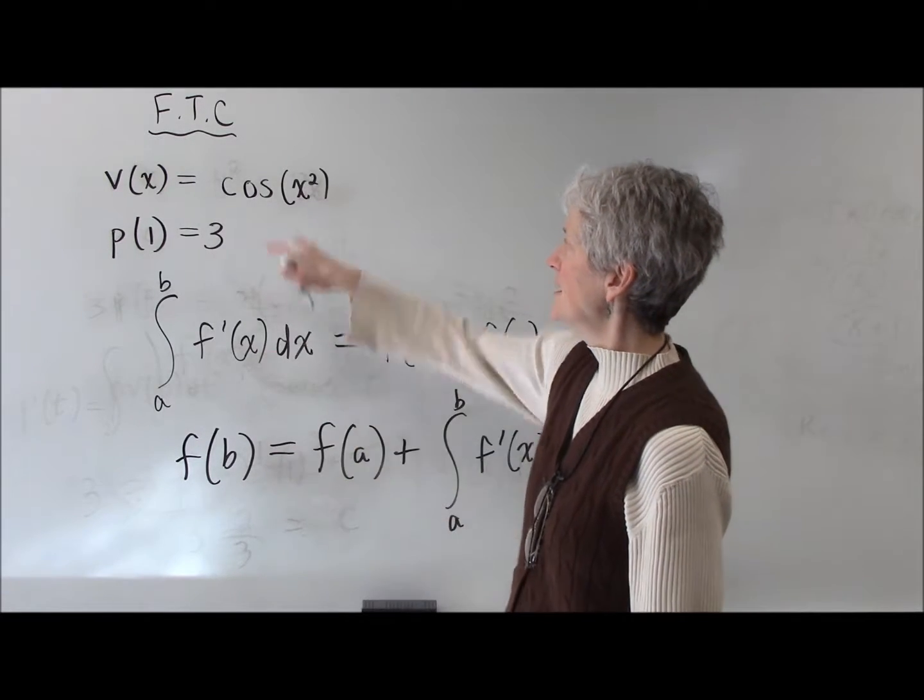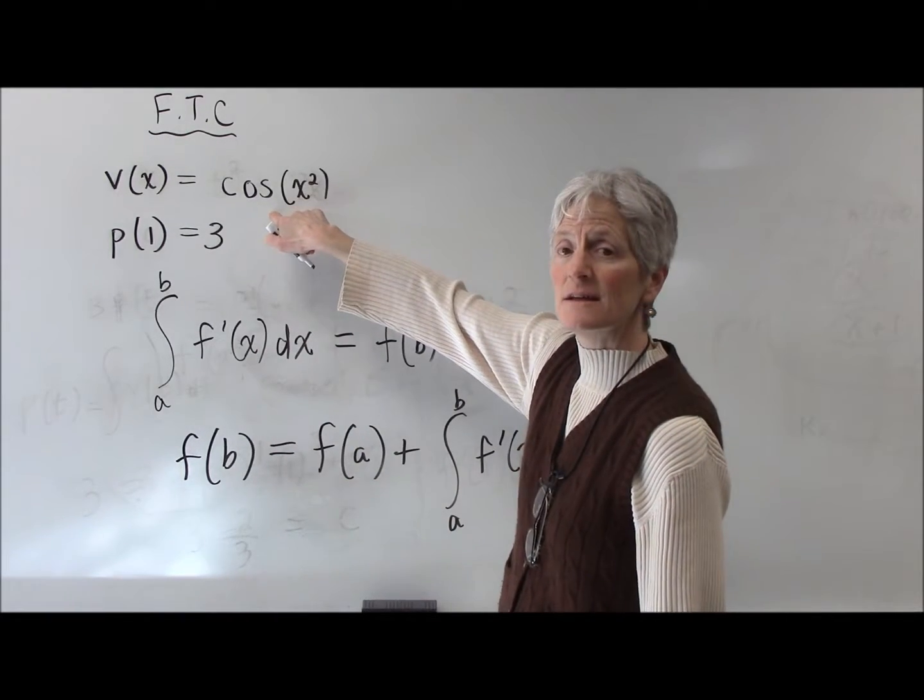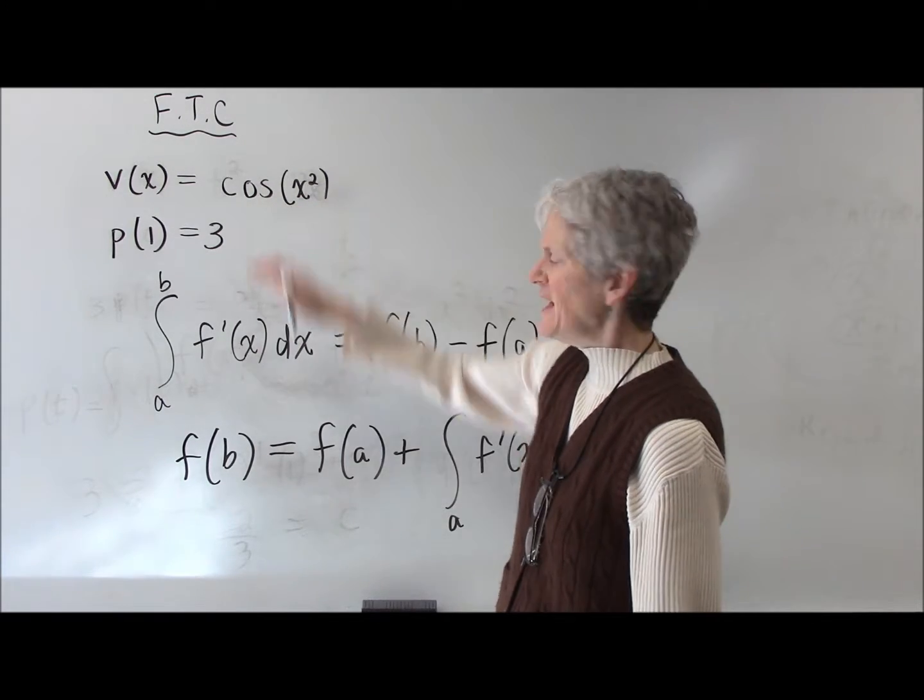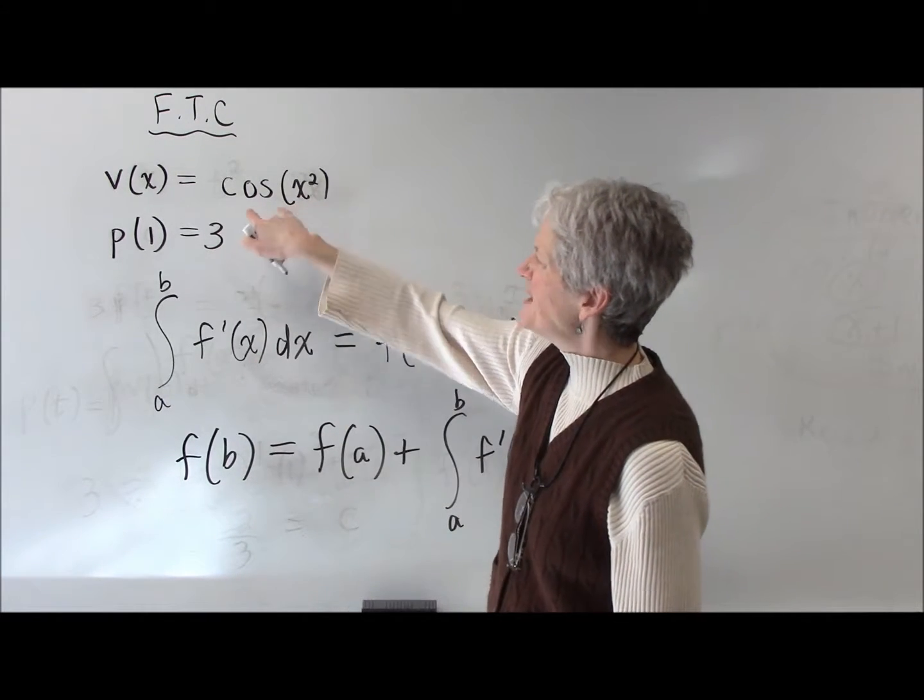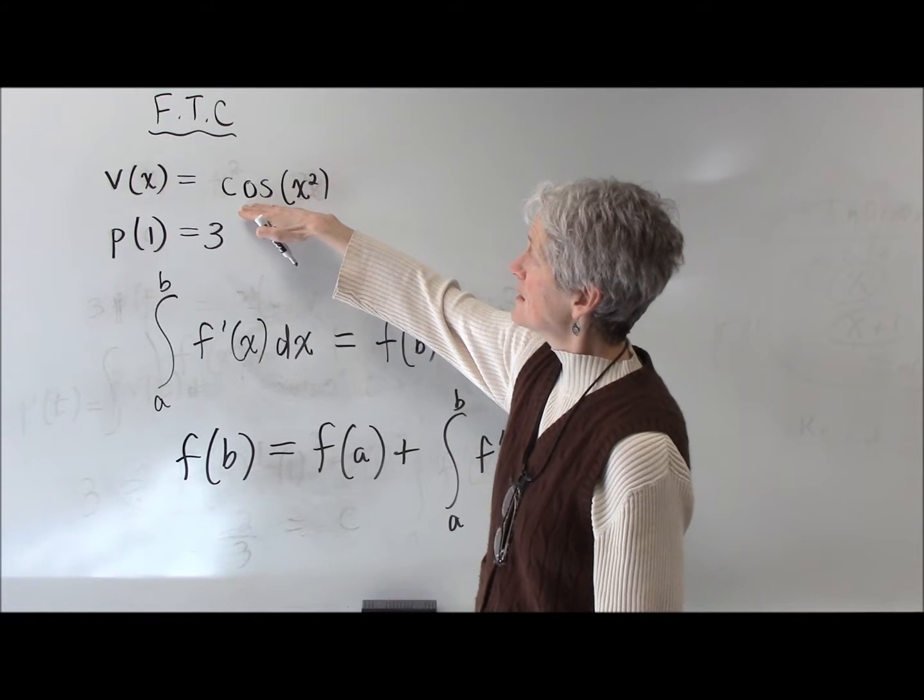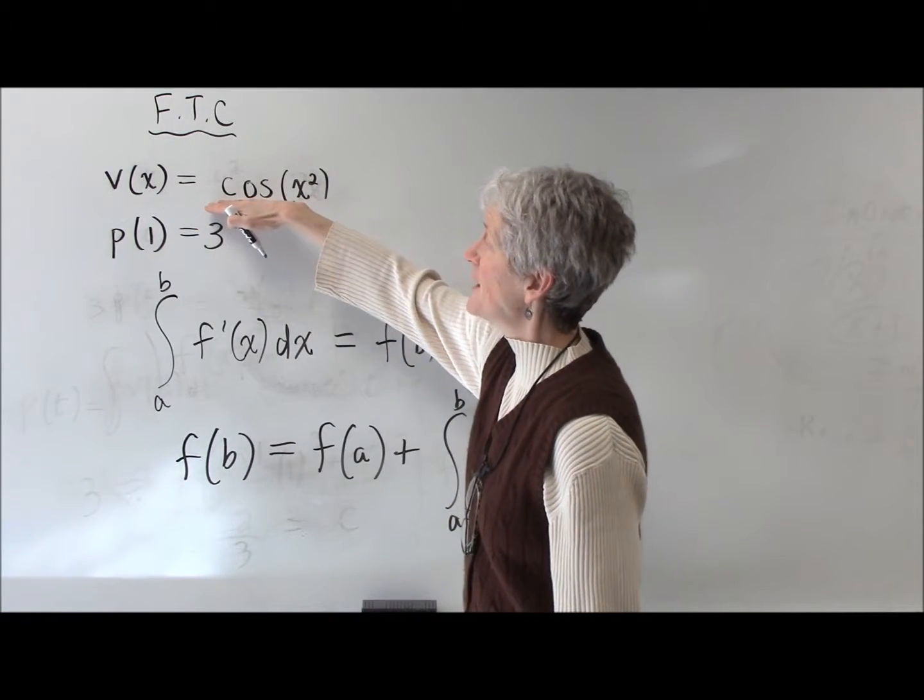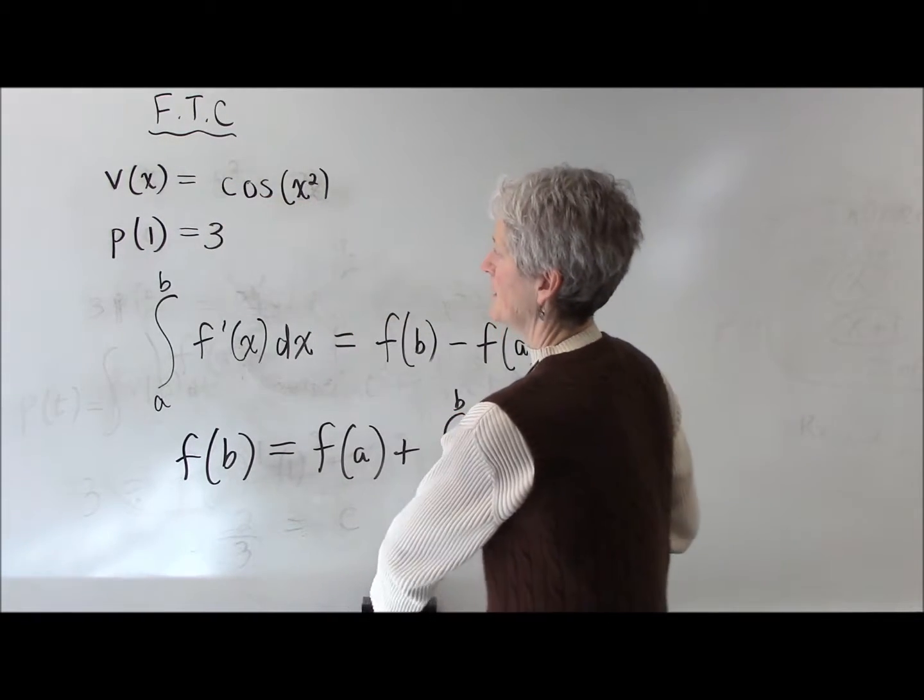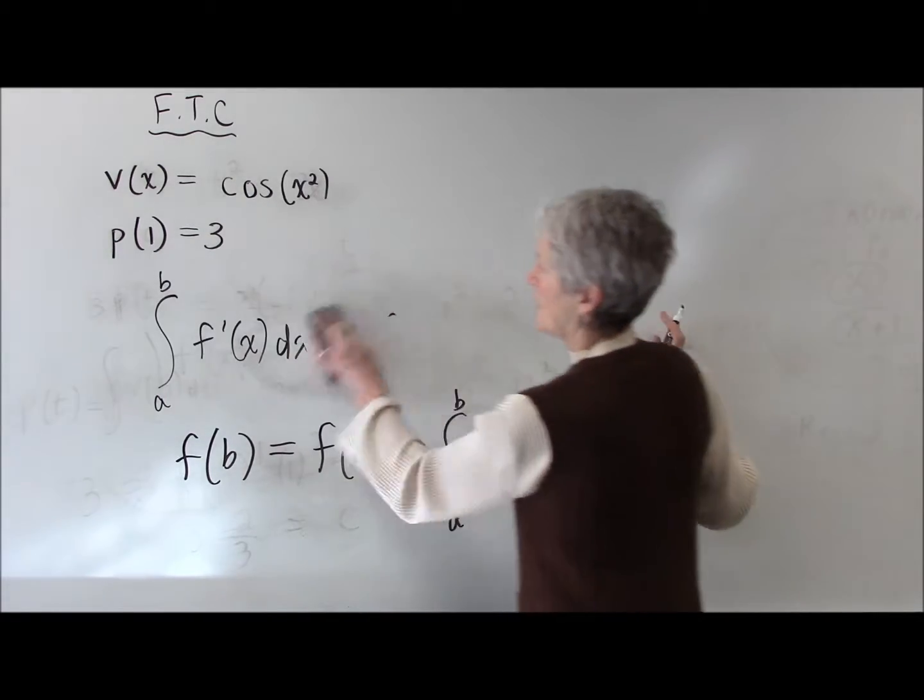basically allows me to write the function to find the antiderivative, or the integral, of any function. This is going to allow me to write a position function for this, where I know the velocity is cosine of x squared. Let's see how I can do it.